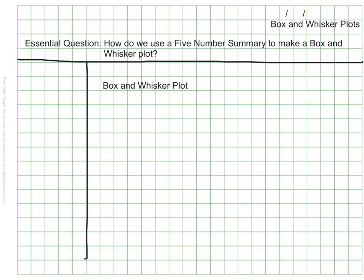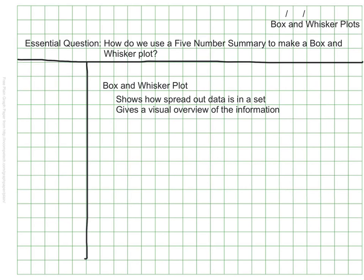Box and whisker plots are designed to show how spread out data is in a set. They also give a visual of the data without actually giving us all of the values — more of an overview of information. A box and whisker plot gives just five pieces of information, and we call this a five-number summary.